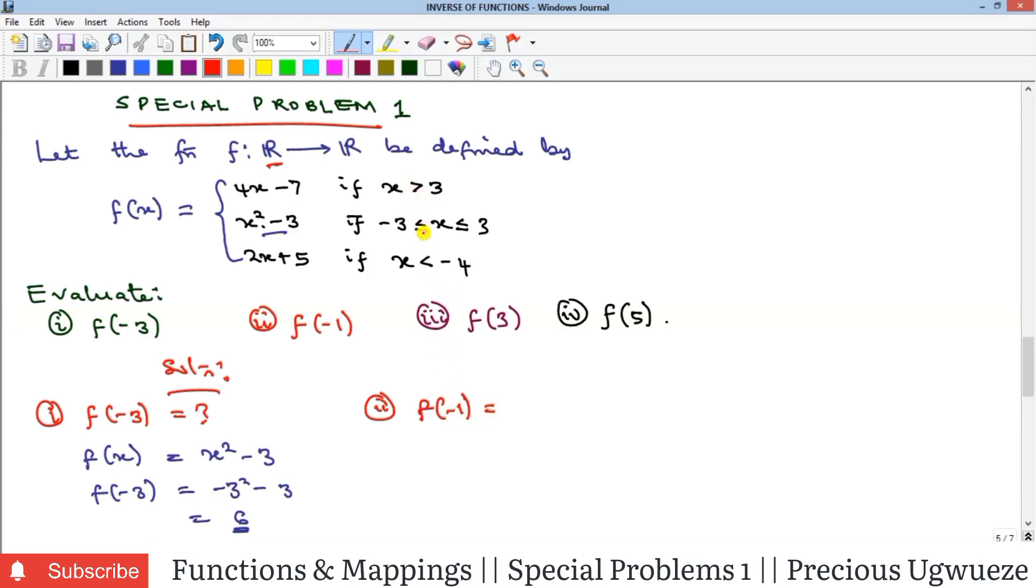Where is minus 1 found? It's also in this place. Look at it: minus 3 down to positive 3. Minus 1 is in between because you have minus 3, minus 2, minus 1, and so on. That means we are also going to use f of x equal to x squared minus 3.